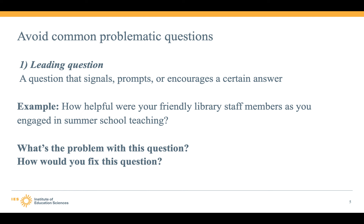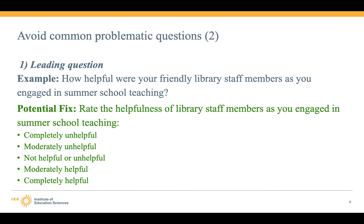The fix is quite easy — just make the wording more neutral. Instead of the leading version, say: "Rate the helpfulness of library staff members as you engaged in summer school teaching." I'm taking away the word "friendly" and then providing options to answer on a Likert scale.